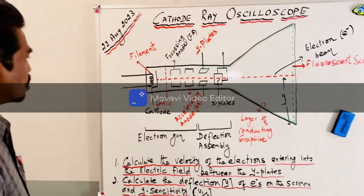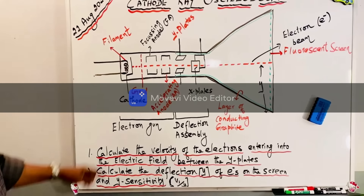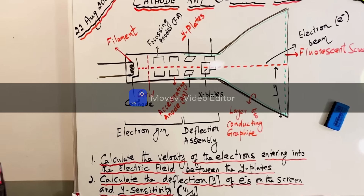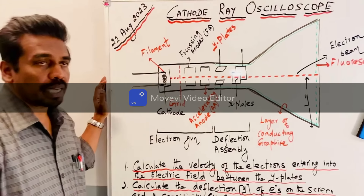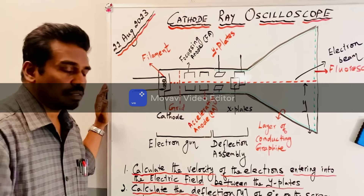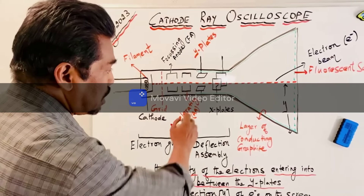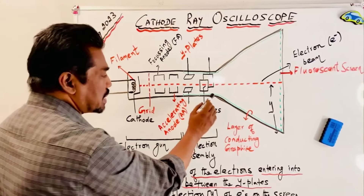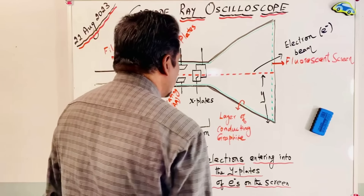The components are: filament, cathode, grid, focusing anode, accelerating anode, Y plates, X plates, and the screen. The screen is coated with conducting graphite.